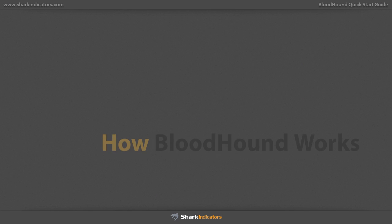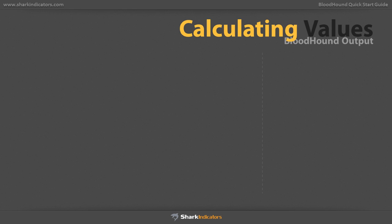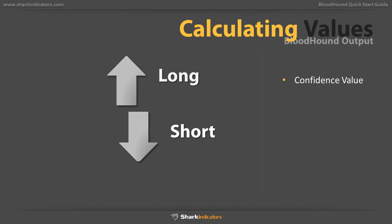I will now show you how Bloodhound calculates its values. A basic understanding of the mechanics of Bloodhound will allow you to create advanced systems as complex as your needs dictate. You saw in the previous section how Bloodhound produces a long value and a short value for each bar. We call these values confidence values, and they range from 0 to 1.